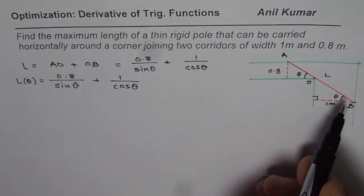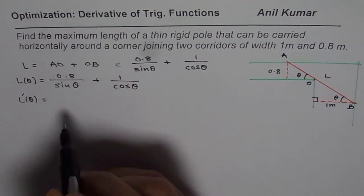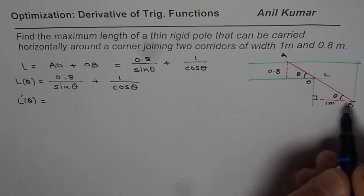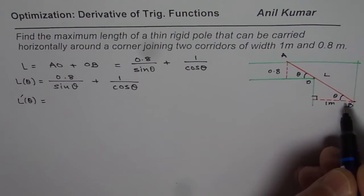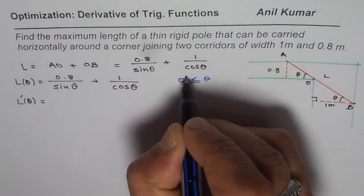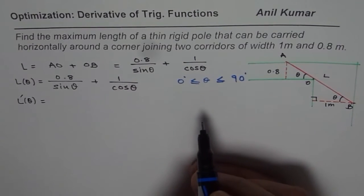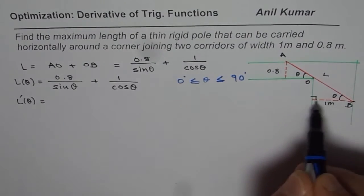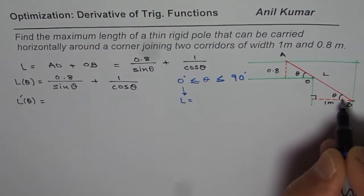To find the maximum length, we find the derivative of this function. The derivative will give us the critical points, and then we will also analyze the boundary conditions. Angle theta could be either 0 or 90 degrees. For 0 degrees, if theta is 0, then the maximum length will be equals to 1 meter — if it is flat, then you can only take that much.